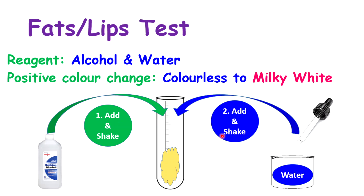One of the tests is the lipid or fat test. The fat test can be done in a very simple way called the grease spot test — you rub the food on a piece of filter paper and if you see grease spots, you can conclude that fats or lipids are present. However, the test using alcohol involves two colorless liquids — alcohol and water. If when they react with the food the mixture turns milky white, then you can conclude that fats or lipids are present.